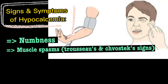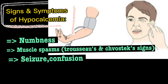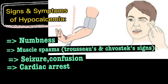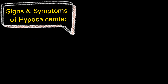The signs and symptoms of hypocalcemia include: numbness, which is one of the most important symptoms, and muscle spasm. The clinical signs include Trousseau's sign, where the patient's wrist will be contracted by cuffing the forearm, and Chvostek's sign, where the facial muscles will be contracted by tapping on the facial nerve. The third sign is seizures, and the fourth is confusion. Cardiac arrest may also occur as a result of hypocalcemia.